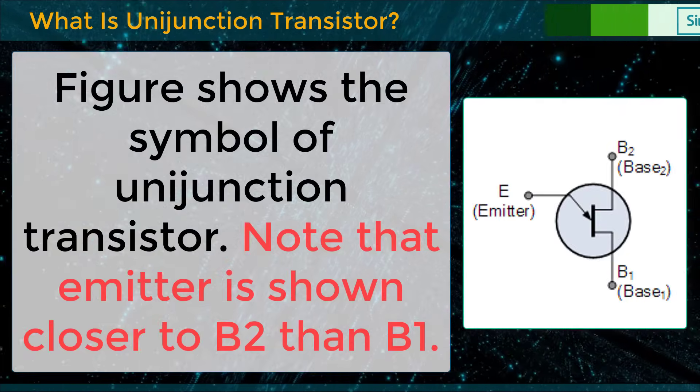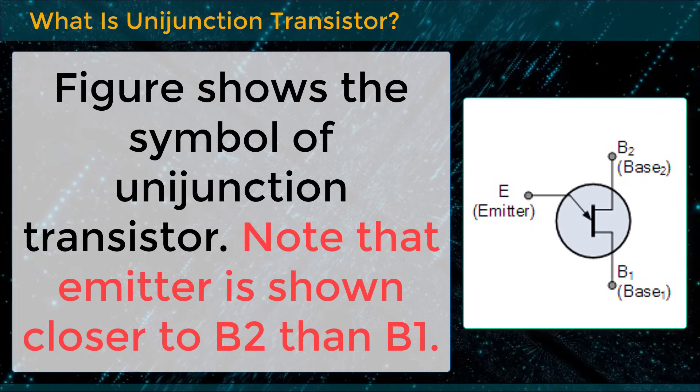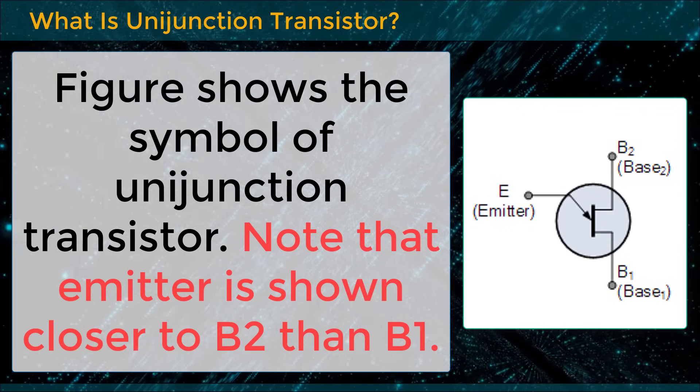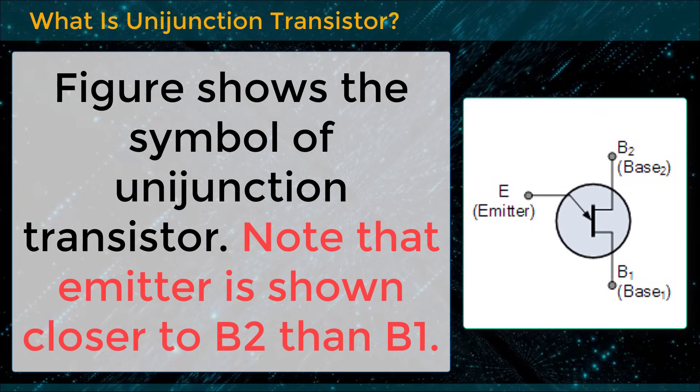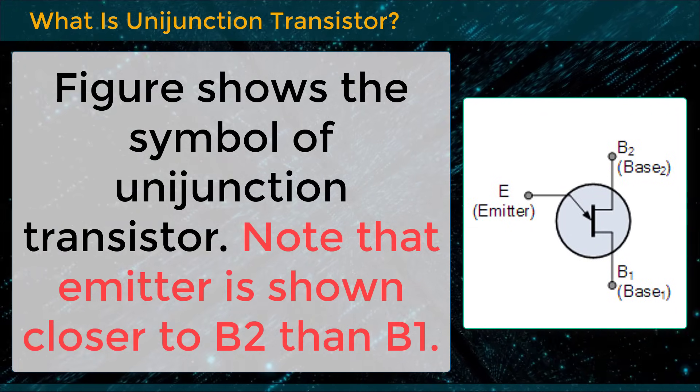This figure shows the symbol of Unijunction Transistor. Note that the emitter is shown closer to B2 than B1.